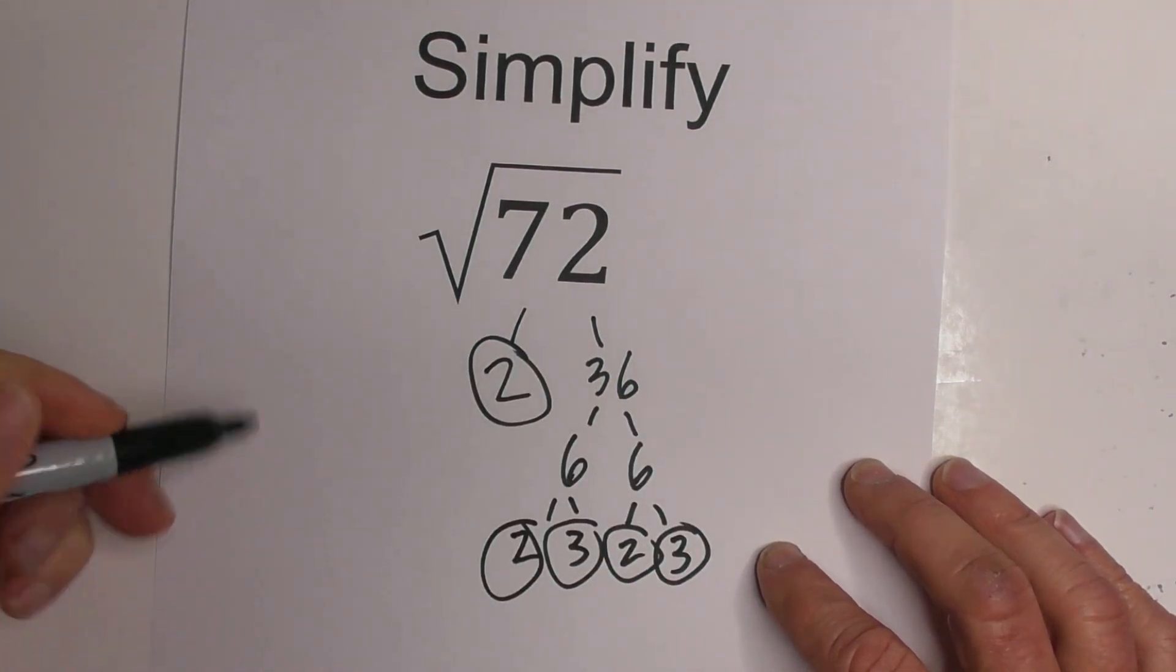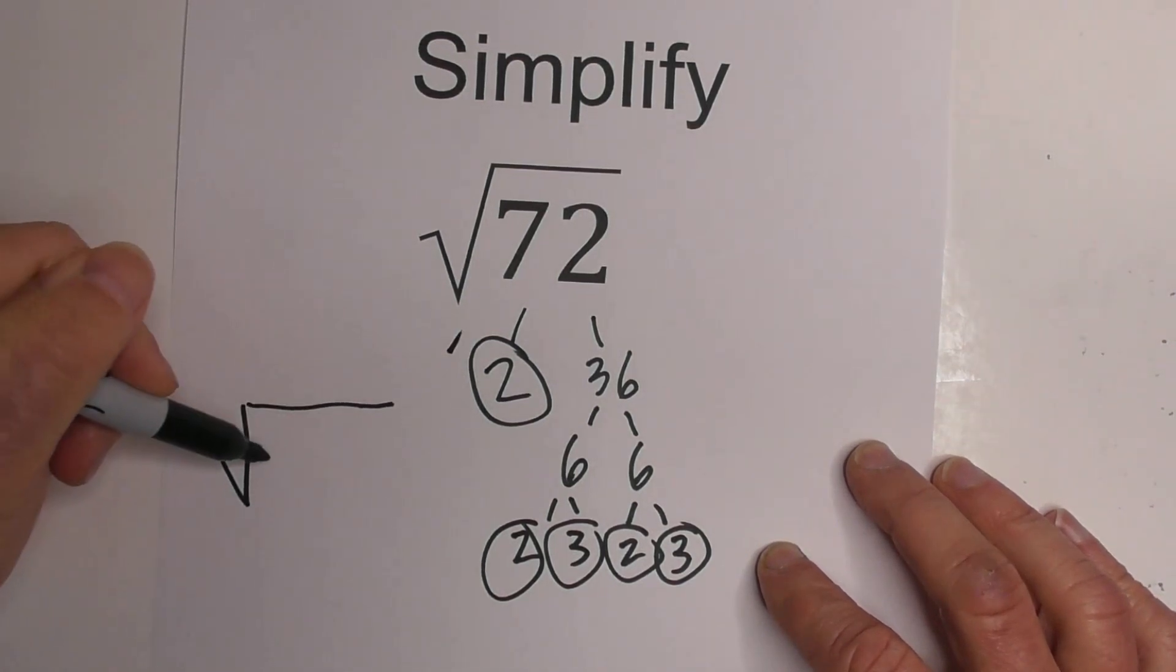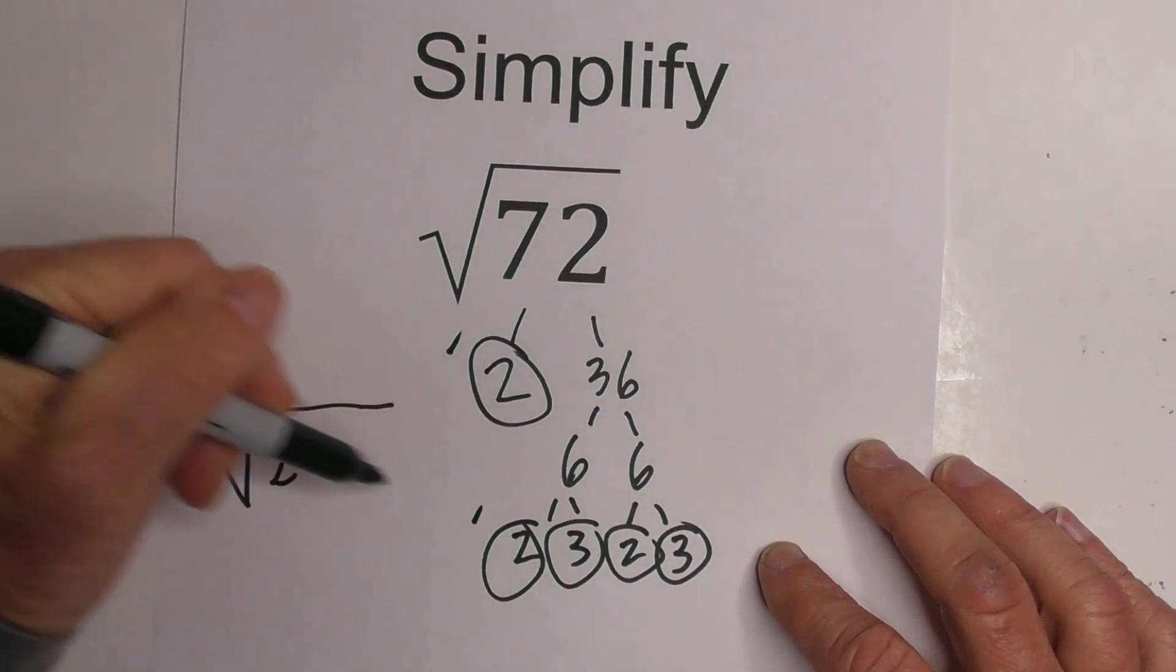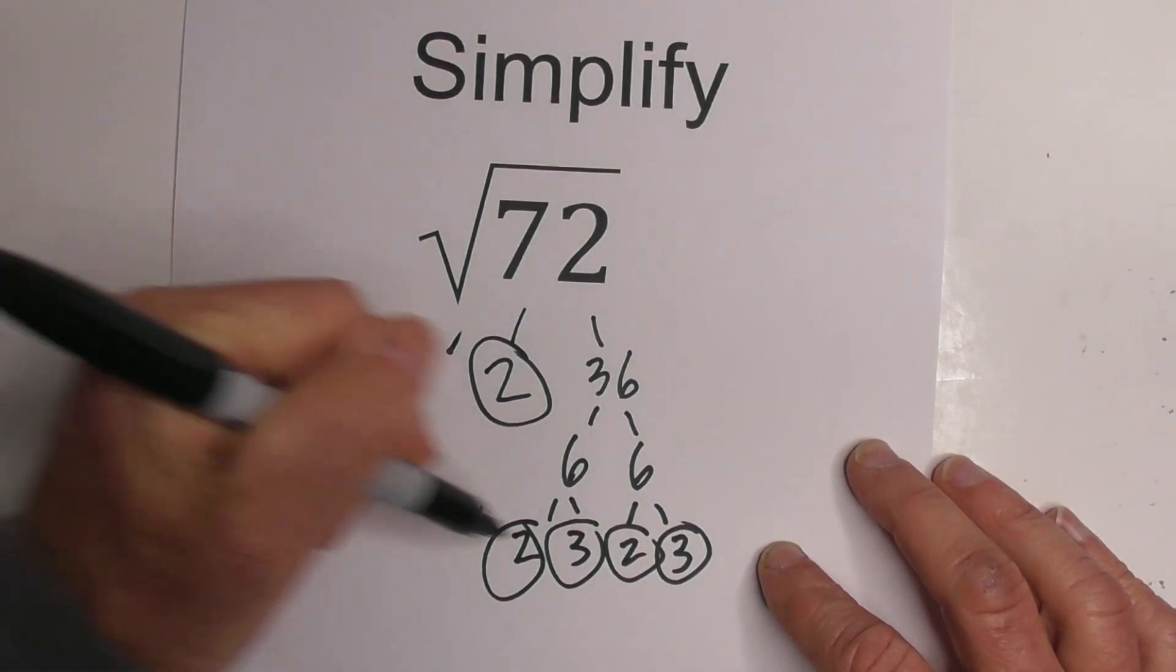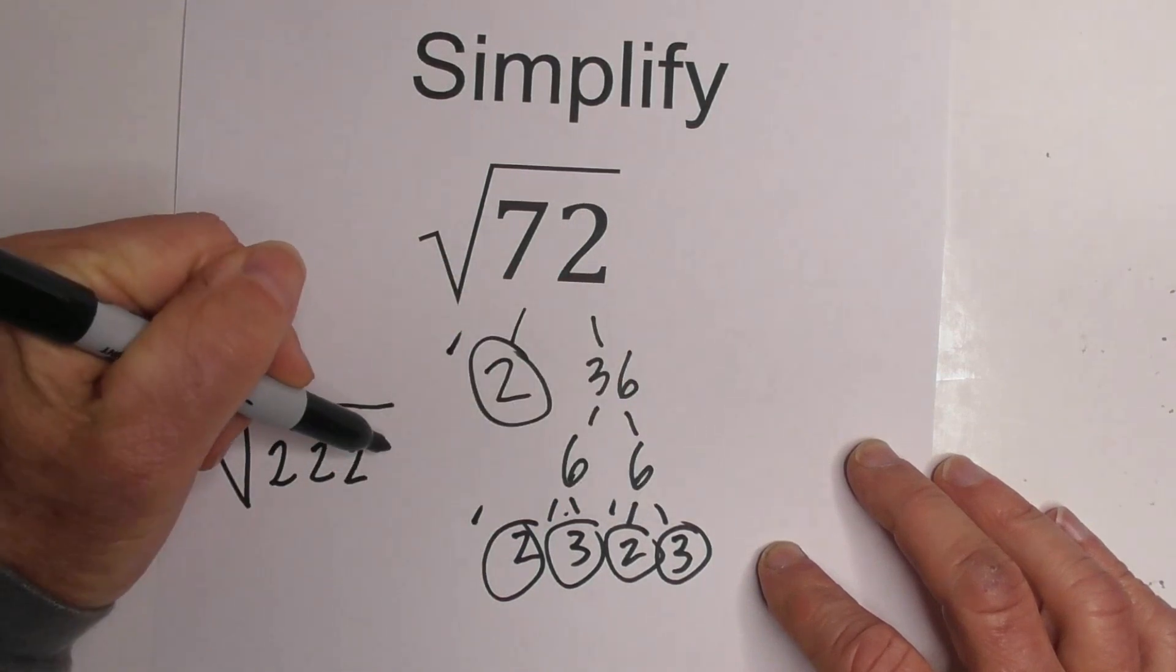Now I'm down to prime numbers, so I'm going to rewrite this underneath the square root sign. I'm going to be careful here, make sure I get them all. There's another 2, and then here's another 2, and then we have 3 and 3.